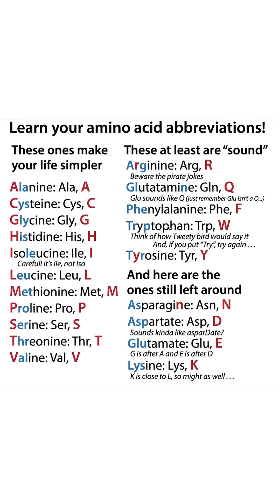Tryptophan — say it like Tweety Bird and you remember that it is a W. And if you thought the abbreviation was TRY, try again — it's actually TRP. Tyrosine: its second letter is a Y, so tyrosine's abbreviation is Y.